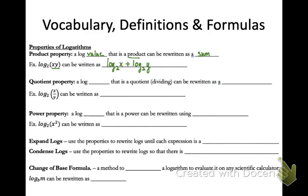You can also use the product property in the opposite direction — going from two logarithms being added and rewriting them as a multiplication. Now the quotient property: quotient means to divide. A log value that is a quotient can be rewritten as a difference. Log base 2 of x over y can be rewritten as log base 2 of x minus log base 2 of y. Notice in both properties, the base is repeated.